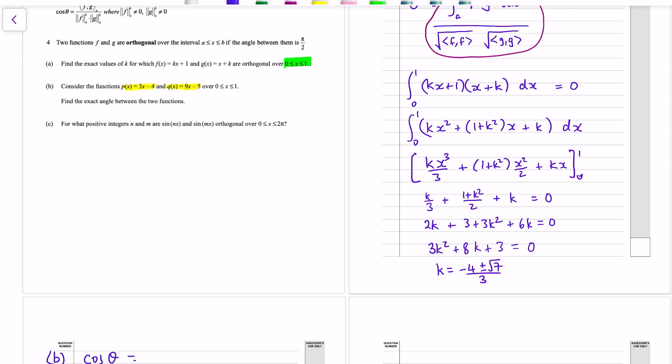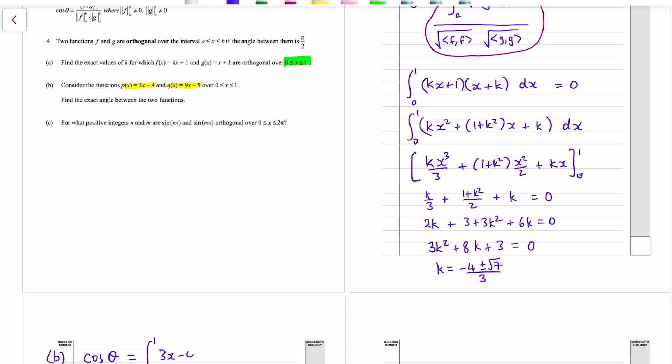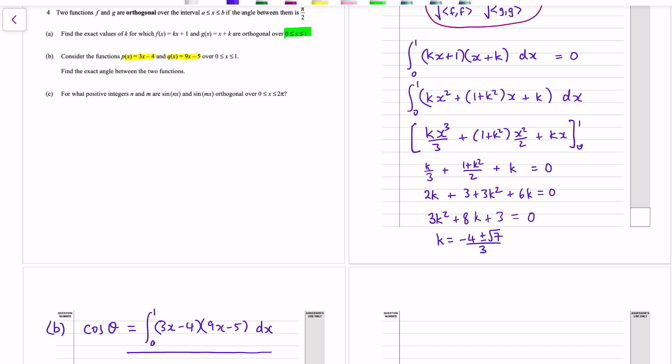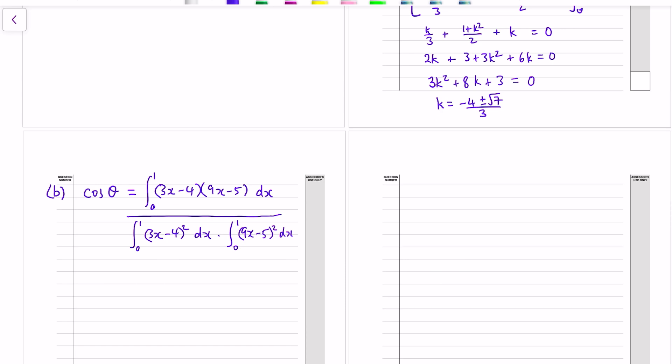So okay, this time we need to use the same setup that we have here, but the left hand side is no longer 0, it's cos of theta. So okay, cos of theta is equal to the inner product between 0 and 1 of f times g. And then the denominator, we need to find the norms. So the norms are the inner products of the function with themselves. So 0 to 1, 3x minus 4 squared, and then multiplied by the same thing but with the g function, 9x minus 5 all squared.